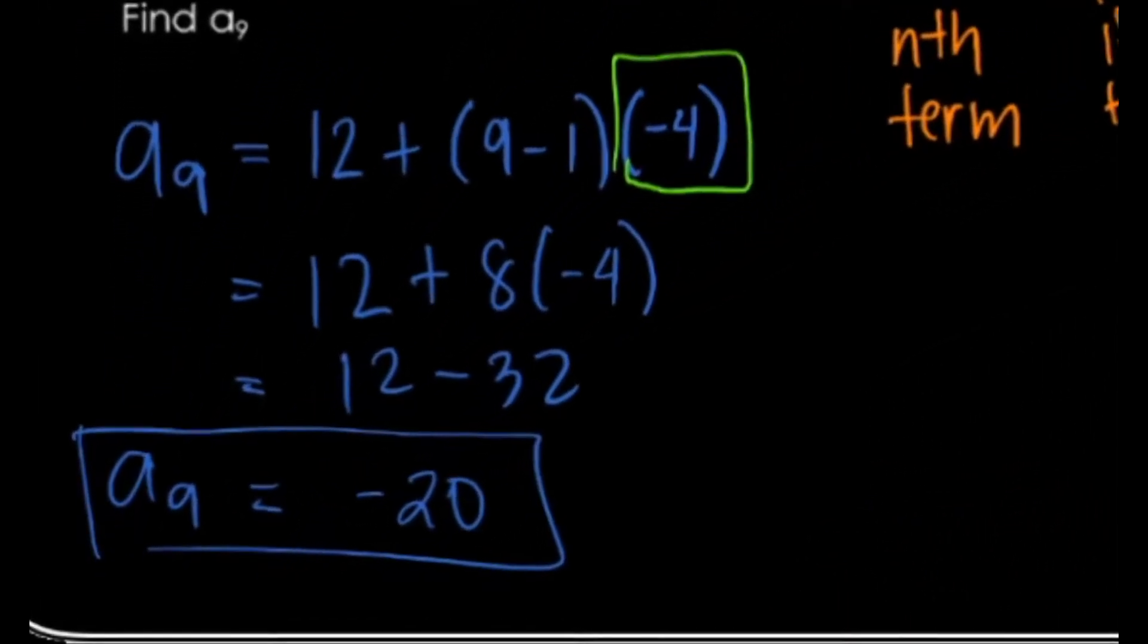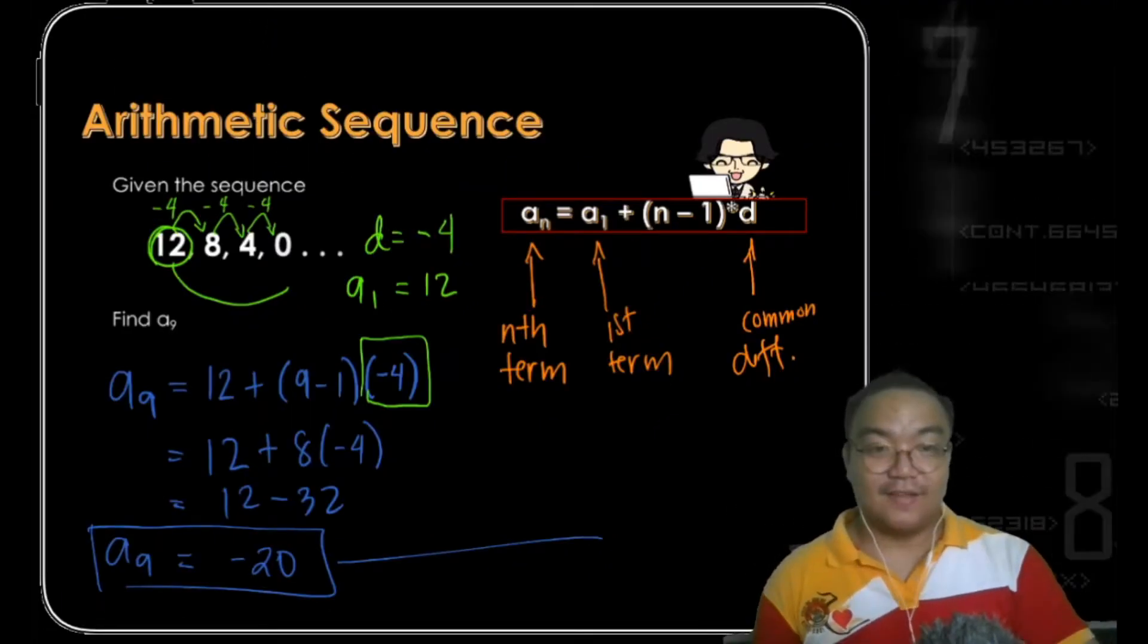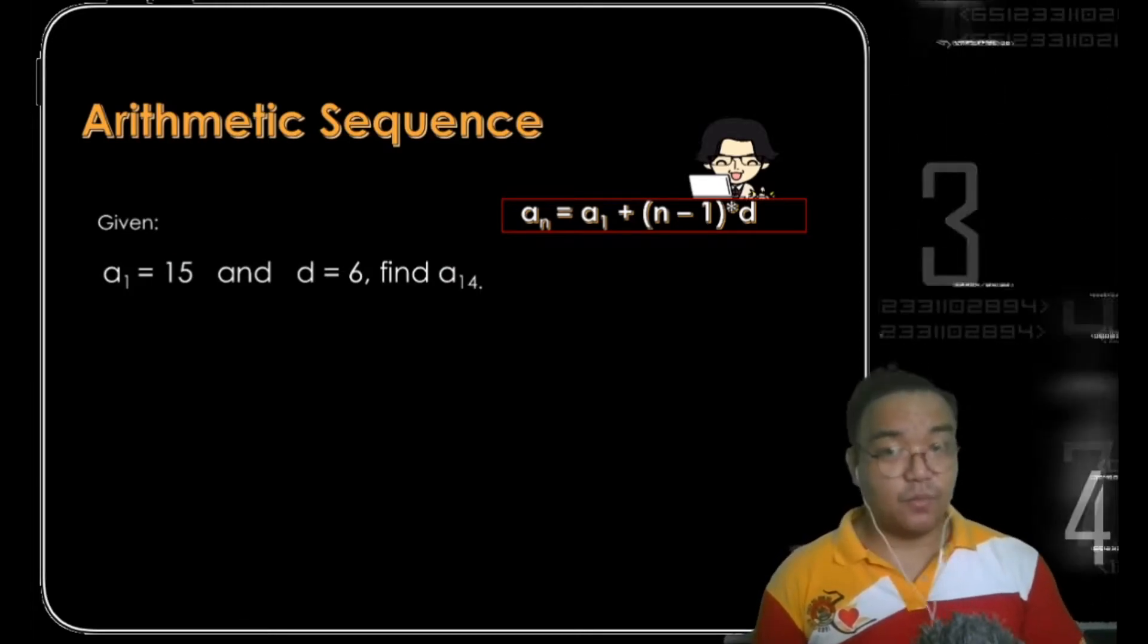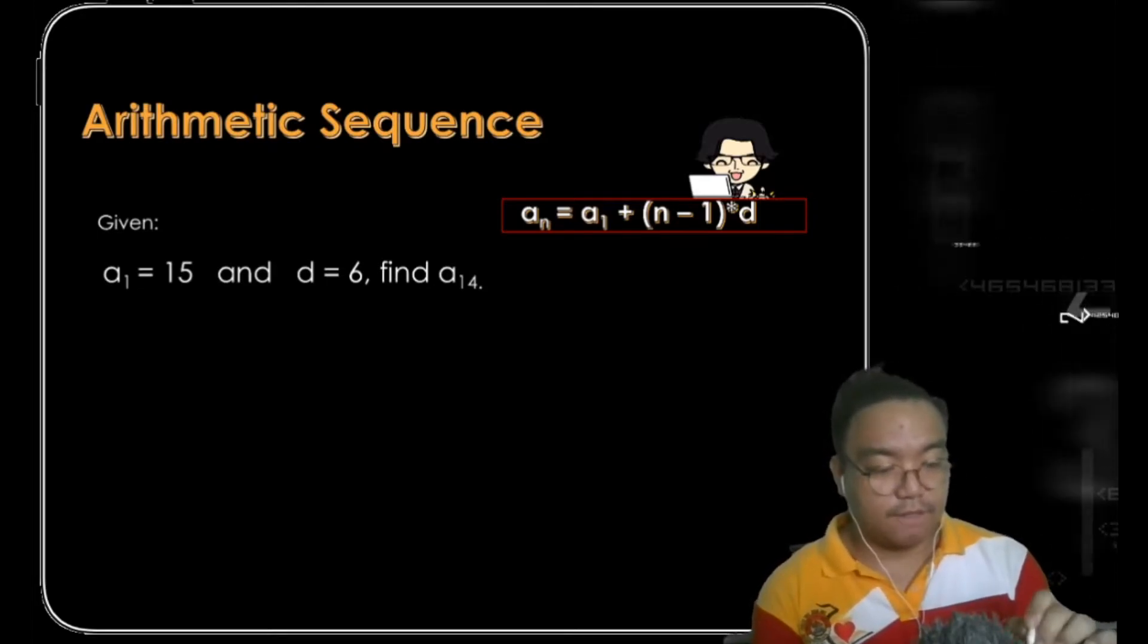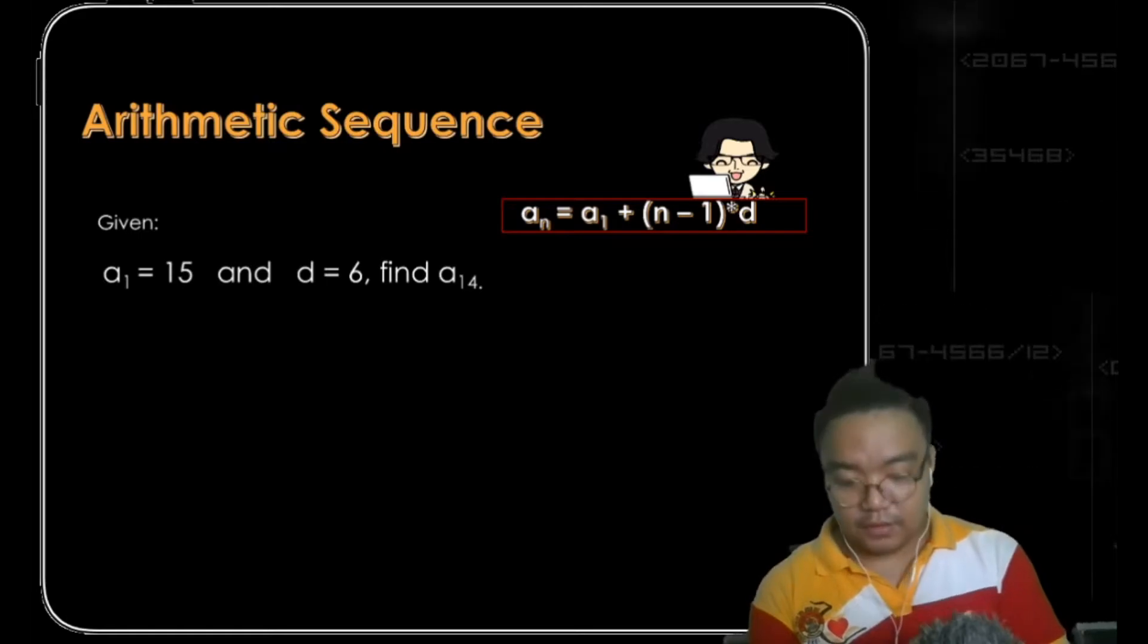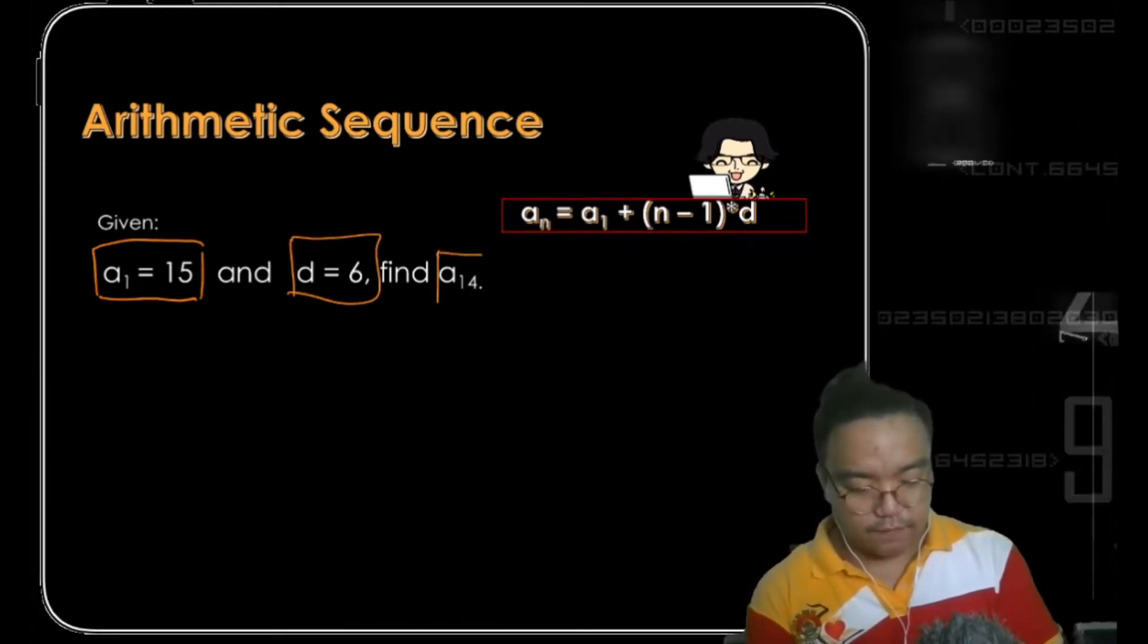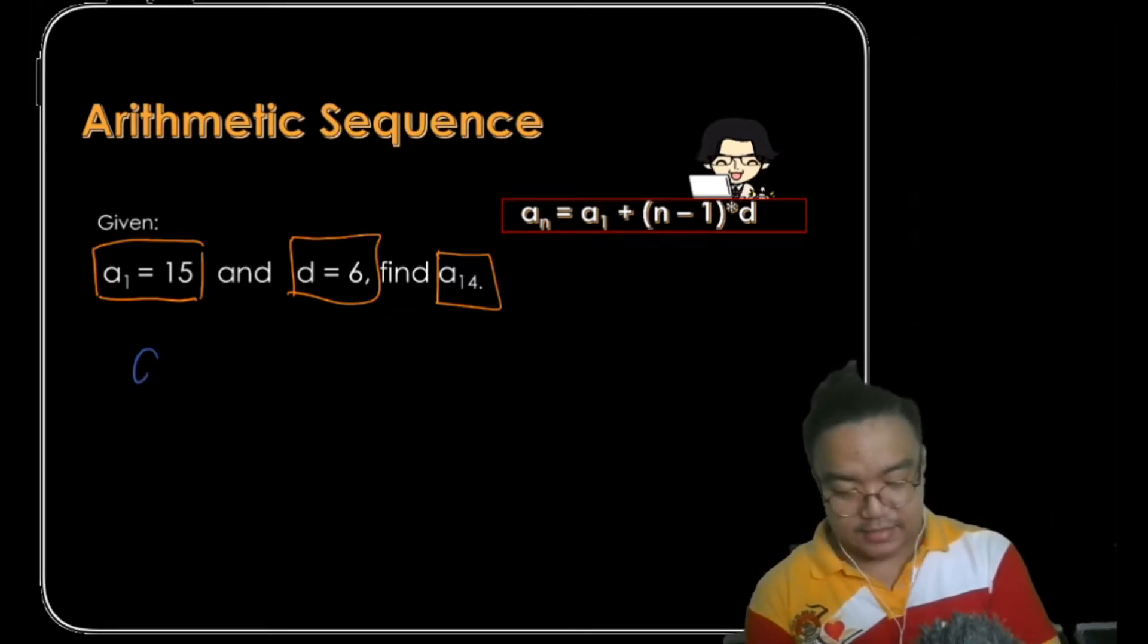Let's proceed to the next one. Given that a sub 1, or the first term, is 15, the common difference is positive 6, let's find the 14th term. Let's list down our values. Our a sub 1 is 15, our common difference is 6, and we are looking for a sub 14.